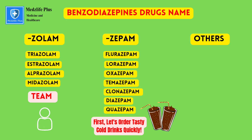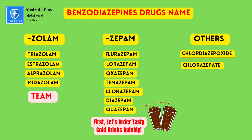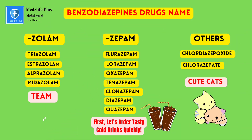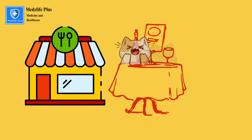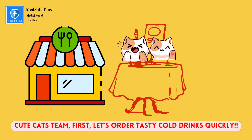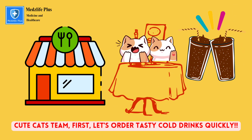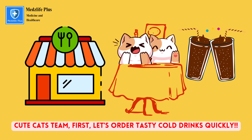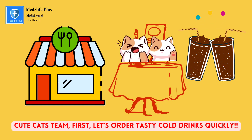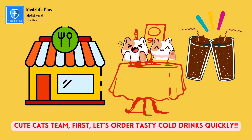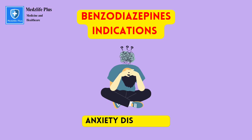The other drugs that don't share either suffix are chlordiazepoxide and clorazepate — 'cute cats' is the mnemonic for those. Putting it all together: 'Cute cats, TEAM, first let's order tasty cold drinks quickly.' Now you've remembered all the drug names! Let's discuss the indications.